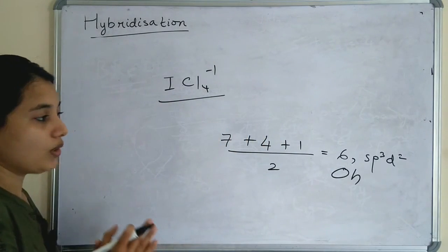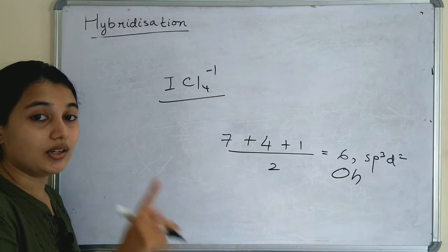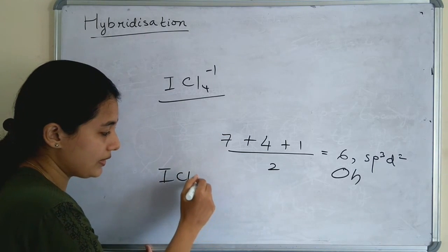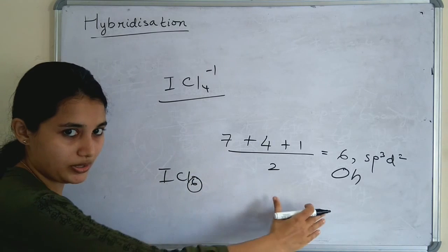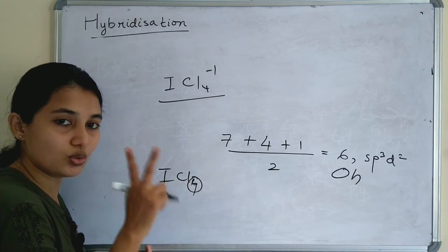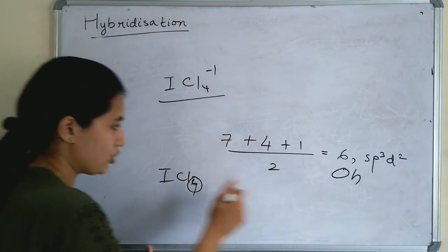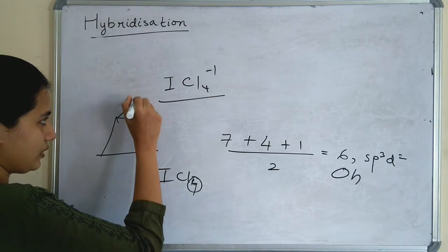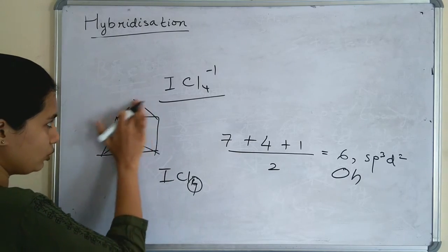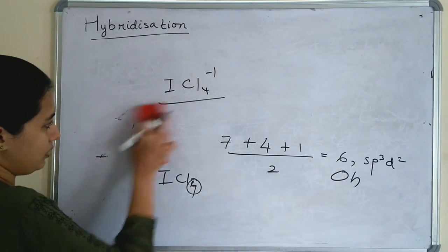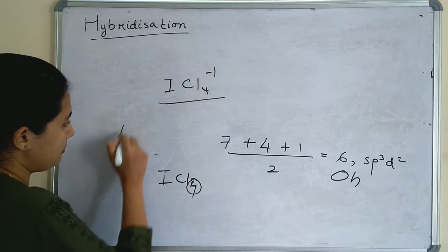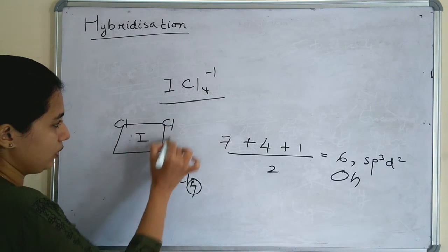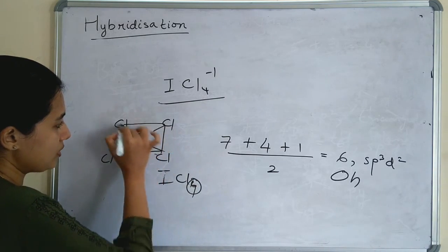The sp3d2 parent structure is octahedral. In the octahedral structure, 6 positions are filled. But here there are only 4 chlorine ligands in ICl4⁻ — if it were ICl6 all 6 positions would be filled. Since only 4 ligands are present, 2 positions are occupied by lone pairs. When 2 ligands are removed from octahedral, the resulting shape is square planar. So ICl4⁻ is a square planar complex.